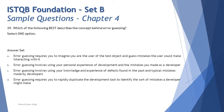Option D says: error guessing requires you to rapidly duplicate the development task to identify the sort of mistakes a developer might make. Why should we do double effort to duplicate a development task just to understand what a developer can do? That would be more time-consuming — it's a repetition of development efforts to find out what could go wrong. We are not trying to guess errors by re-doing development work.